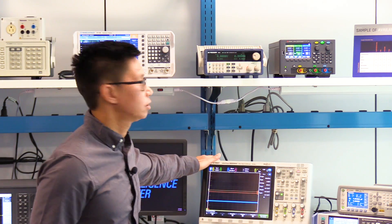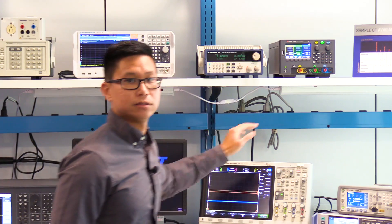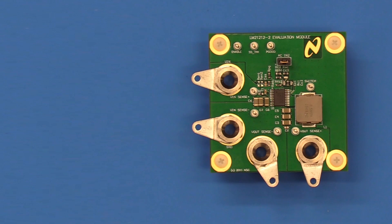We'll be using the oscilloscope, power supply, and the DC load to do our experiments. Let's look at the TI evaluation board first.